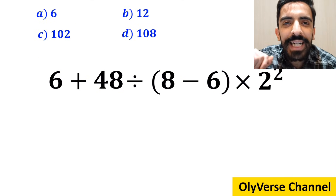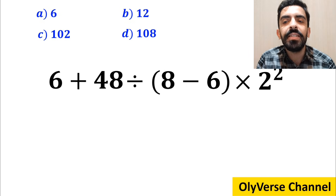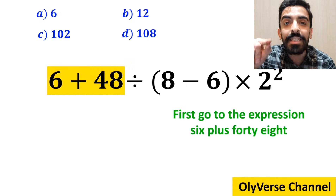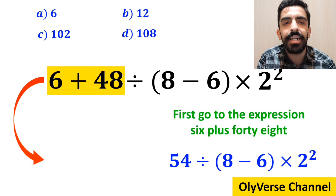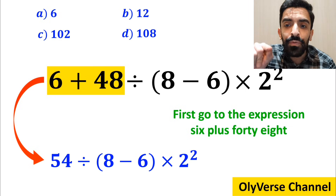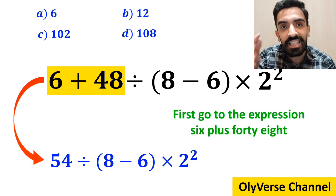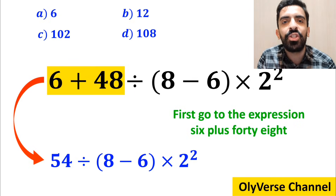Let's dive in and break it down step by step together. Many people when solving this question first go to the expression 6 plus 48, and instead of this expression they write 54 divided by 8 minus 6 inside the parenthesis, then times 2 to the power of 2.